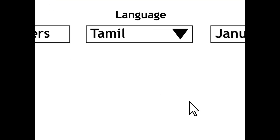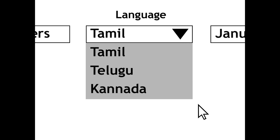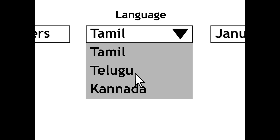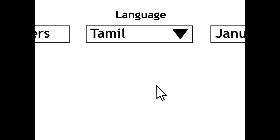There will also be a language drop-down list which contains all the desired languages that the logo is available in. In this case, GRT Jewelers has three languages: Tamil, Telugu, and Kannada. You can choose which language you want your advertising calendar image to be in. If you choose Tamil, your calendar will be in Tamil. If you choose Telugu, it will be in Telugu. If you choose Kannada, it will be in Kannada. For example, I choose Tamil and my calendar image will be in Tamil language.